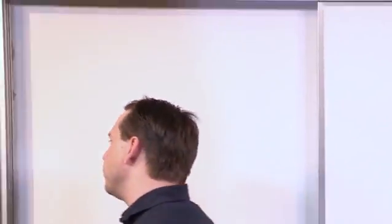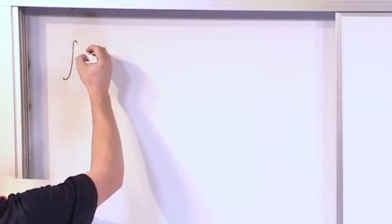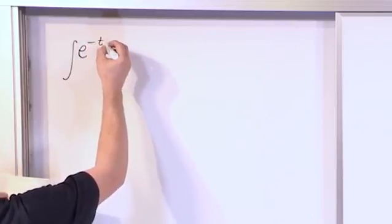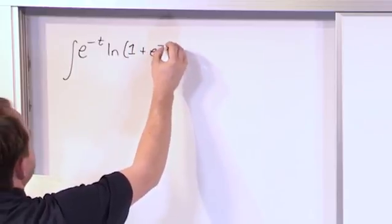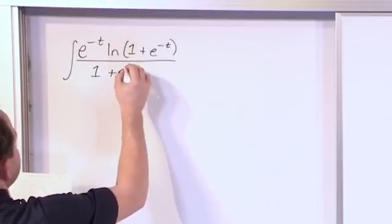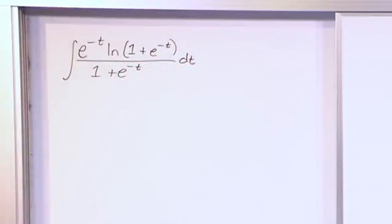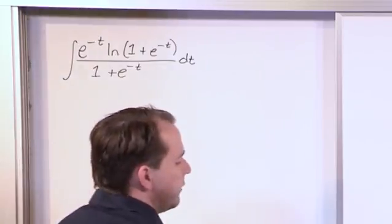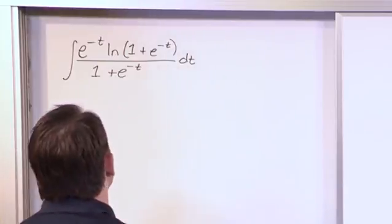I think it's much easier to show you rather than talk about it, and it's something that you just kind of recognize when you're given a problem like this. So let's say we have the integral of e to the minus t times the natural log of one plus e to the minus t, all over one plus e to the minus t, and of course this is all dt. There's a lot of stuff going on — it's very difficult to figure out what the appropriate substitution is straight out of the gate.